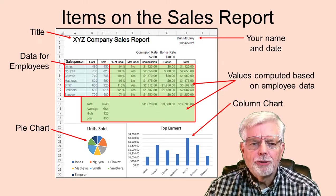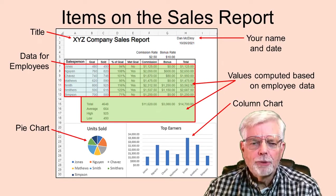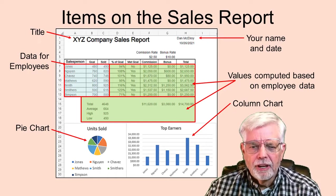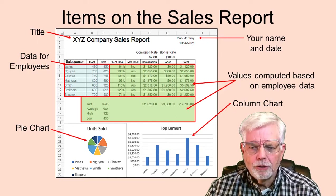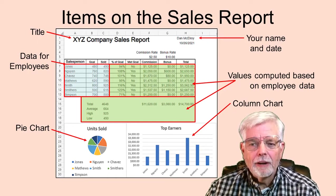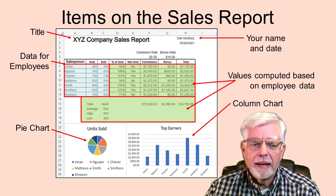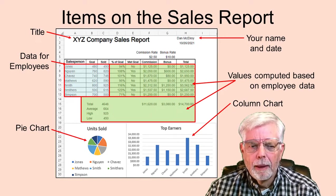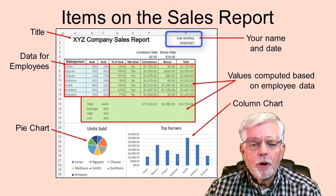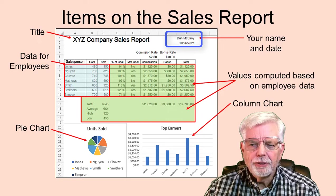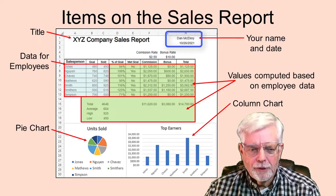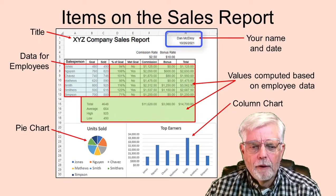A pie chart and column chart is to give a visual display of the units sold and the total paid to each individual person. Make sure your name and the date the report is generated is displayed in the upper right corner of the spreadsheet.